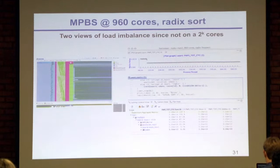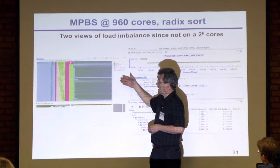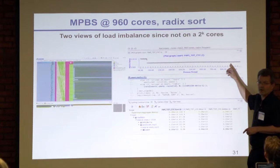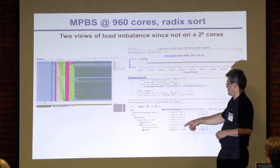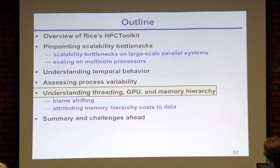To assess process variability, there are a couple of approaches. Using the trace viewer, you can sometimes see it visually — for example, a radix sort not running on a power-of-two number of processors, where some processors get a double load of work. You can also see it in a thread-centric view graphed in HPCViewer, where some threads spend longer in the selected context.